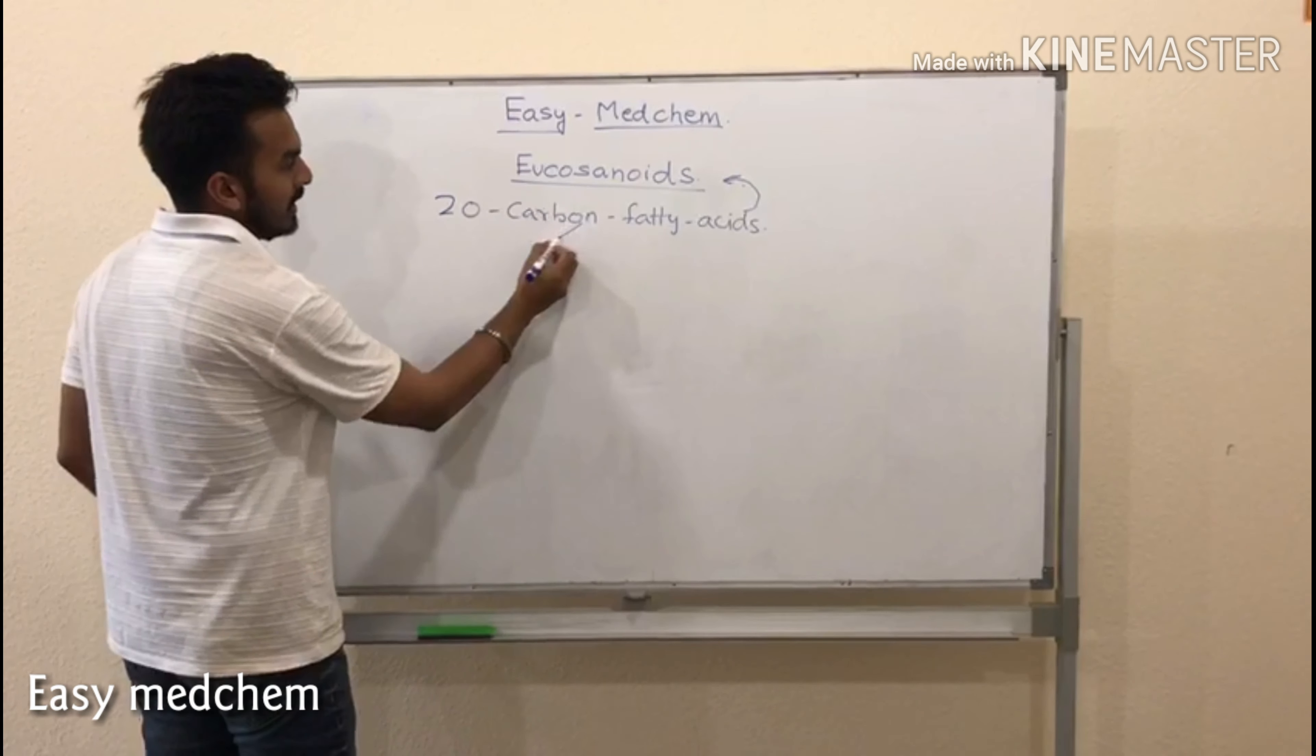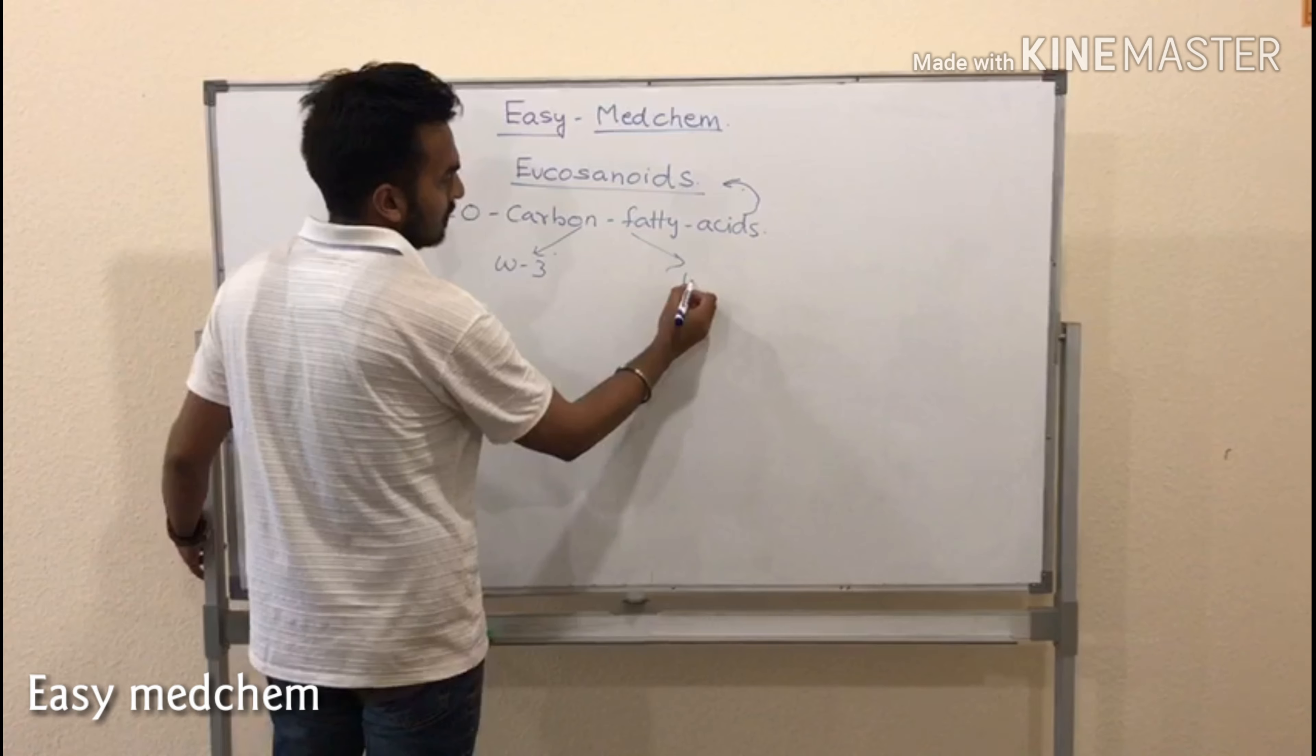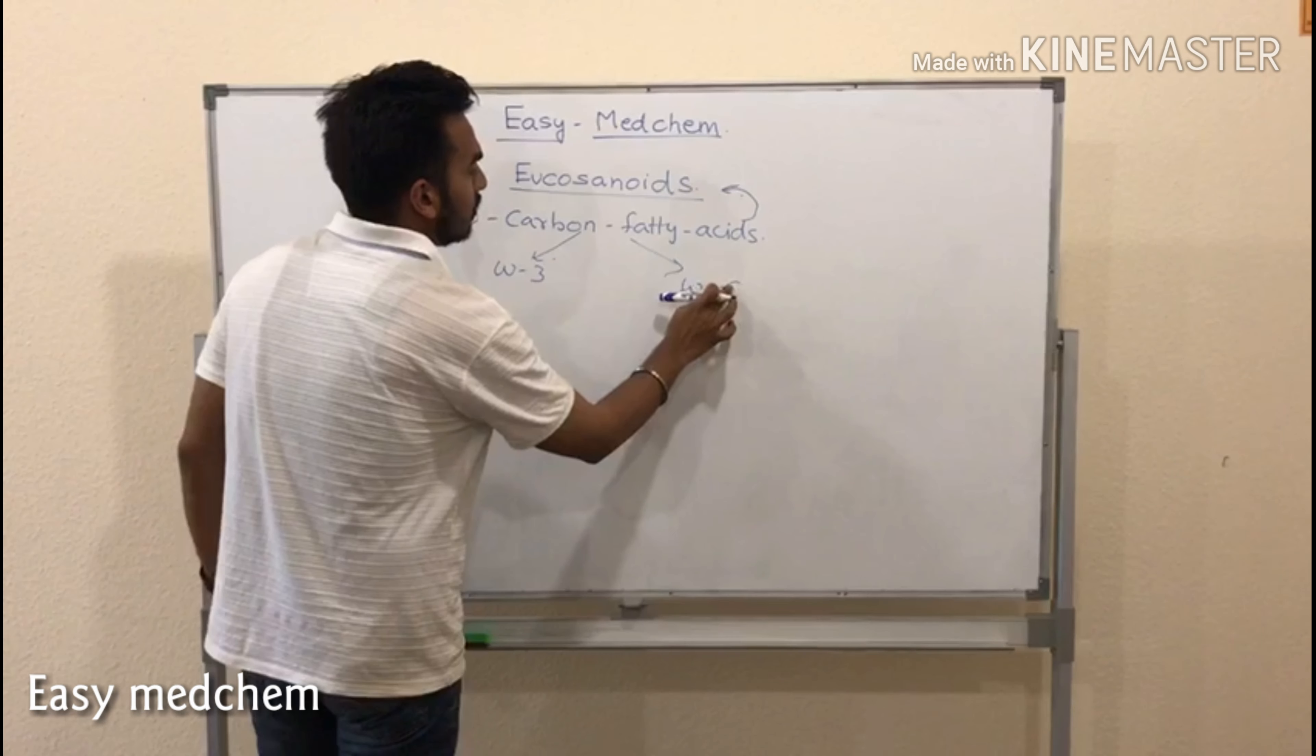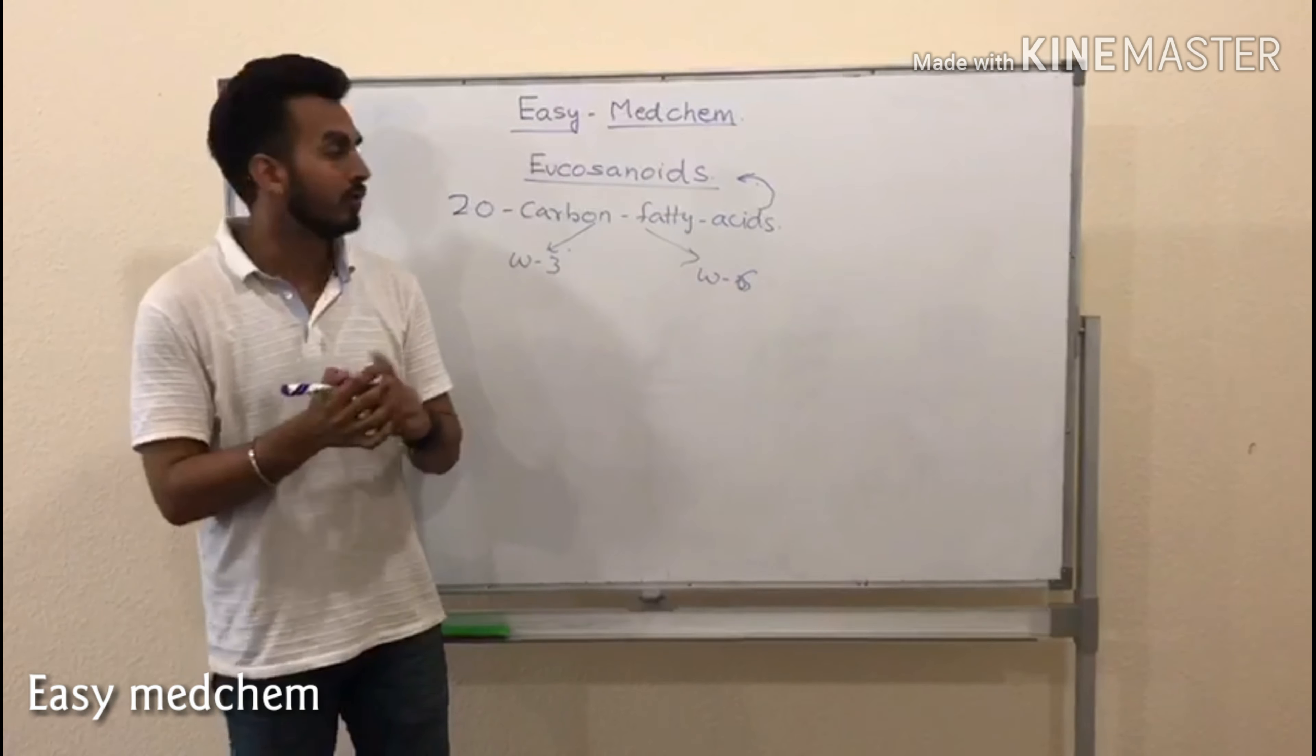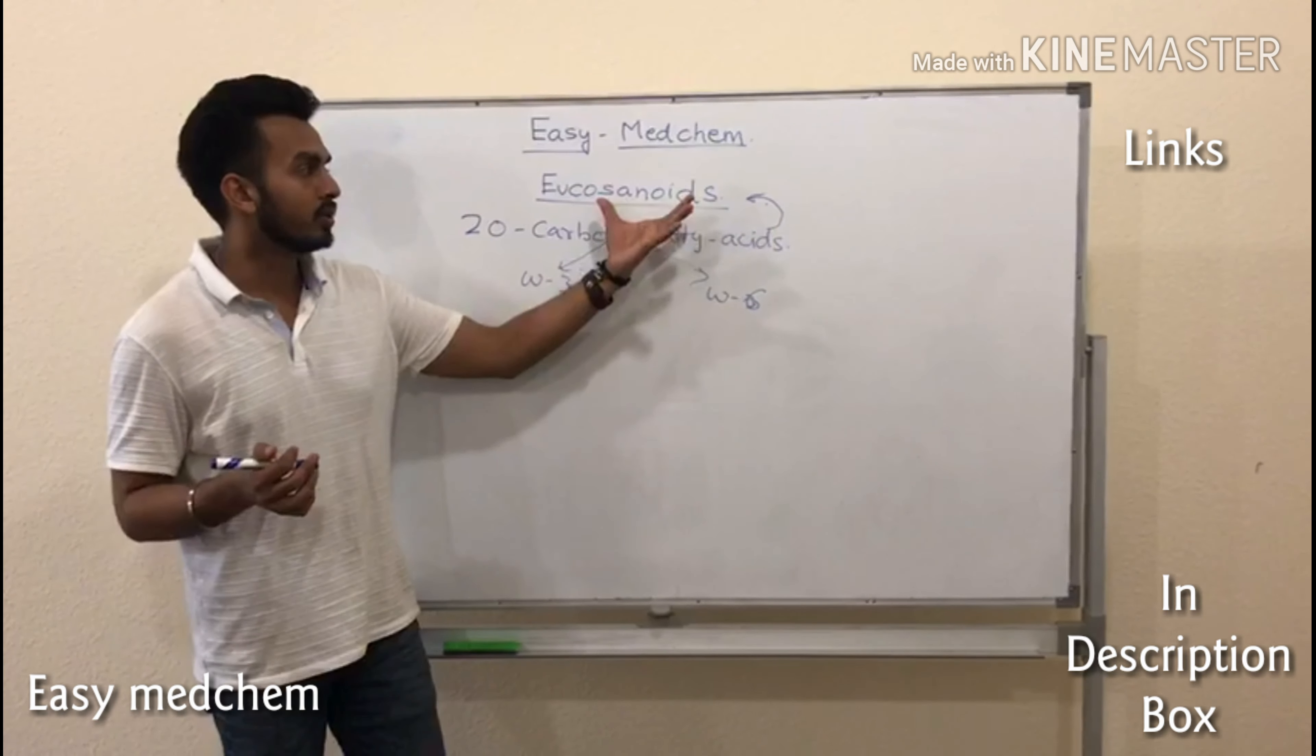Now, the 20 carbon fatty acids can either be omega 3 or omega 6. The omega 3 and omega 6 are the 20 carbon fatty acids. By the oxidation of these 20 carbon fatty acids, we will get the eicosanoids.